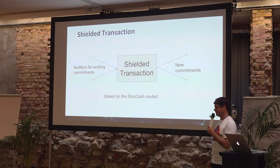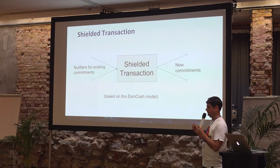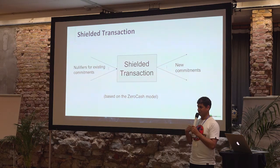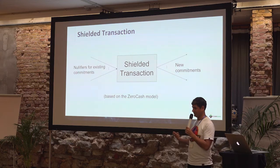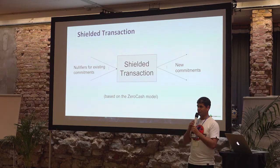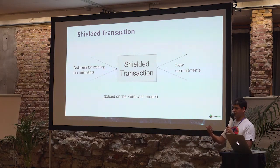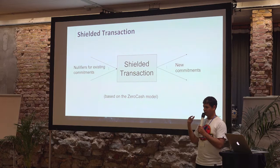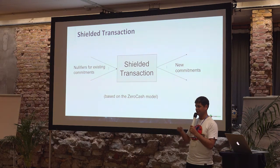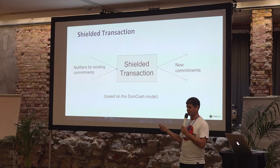The way it's done is there is a unique nullifier related to each commitment. When I spend the commitment, I'm not going to show which commitment I'm spending, but I am going to reveal a nullifier related to this commitment. To go back from the nullifier to the commitment is hard — it's not possible — but part of the proof is to show that this nullifier is related to the commitment that you are spending. So if I show a nullifier once, I cannot use it again. This is a consensus rule, not part of the proof.